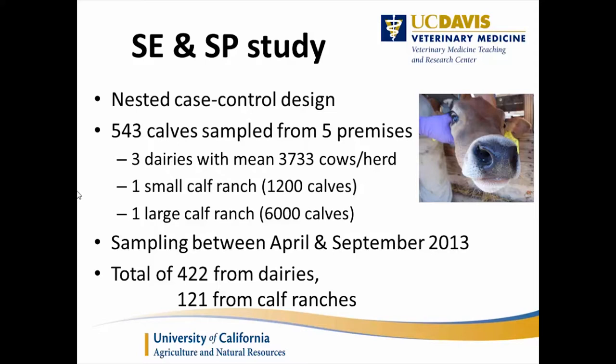That led us to a second study to estimate the accuracy of the scoring system, using a nested case-control design — we enrolled cohorts of calves and followed them, looking for cases and controls as they occurred. We enrolled 543 calves from five premises: three dairies in Tulare County and two calf ranches. The small calf ranch of 1,200 calves was a conglomerate of three dairies pooling their calves; the larger calf ranch gets calves from Arizona and elsewhere in California. This occurred between April and September 2013, with about 422 from dairies and 122 from calf ranches.